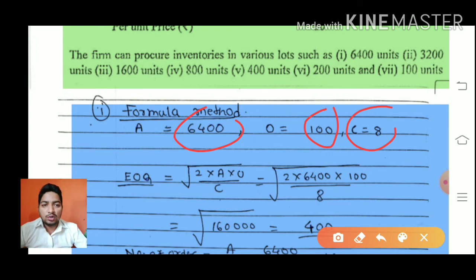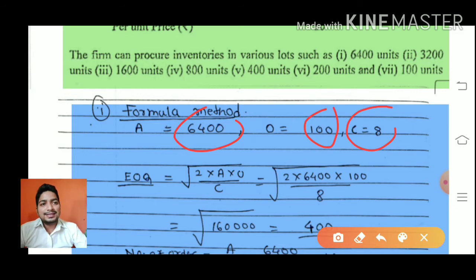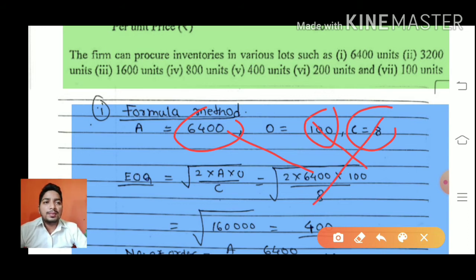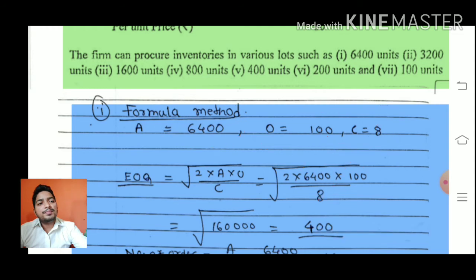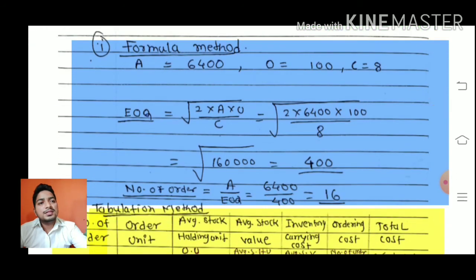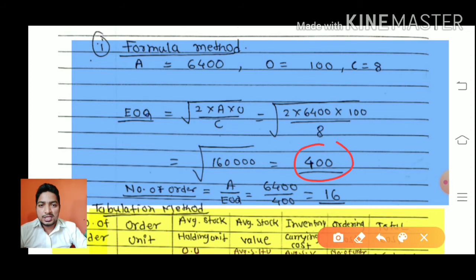The EOQ formula is the square root of 2 into A into O upon C. Here, 2 into A is 6,400, O is 100, and C is 8. We fill up the formula and the answer is 400. So, EOQ equals 400.